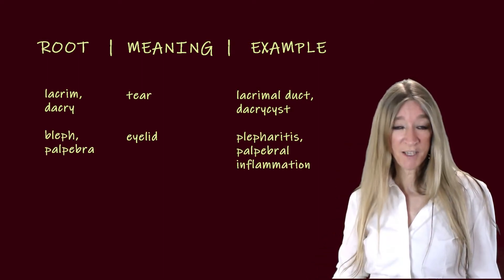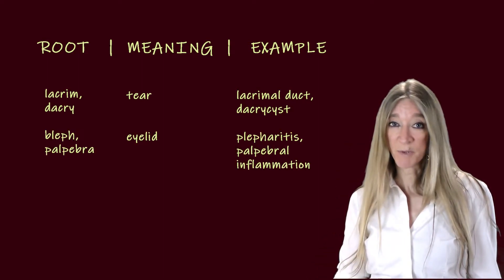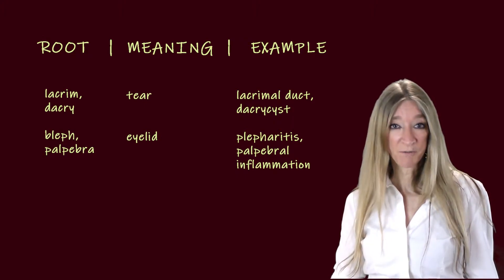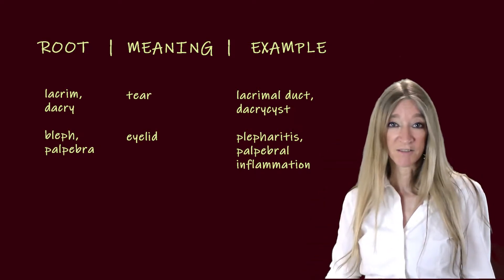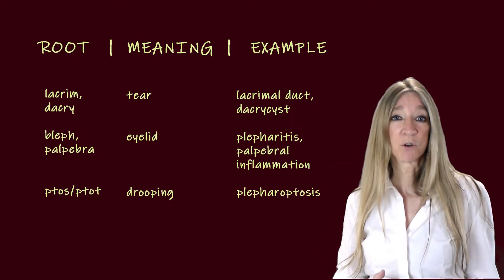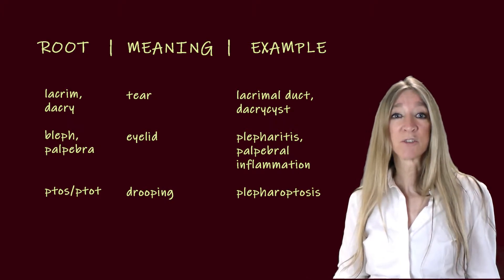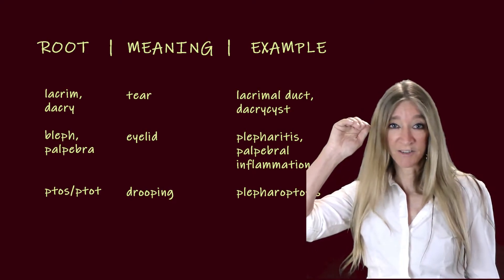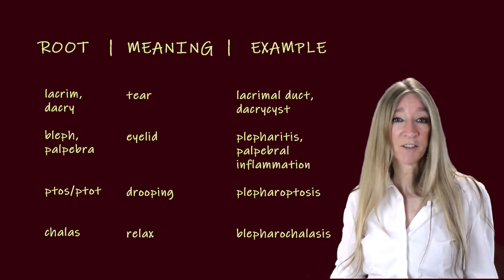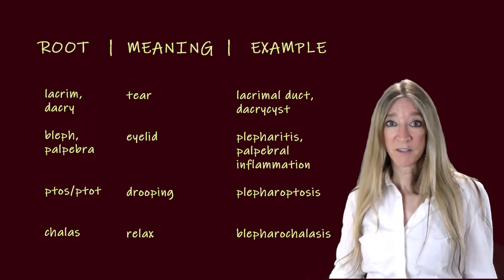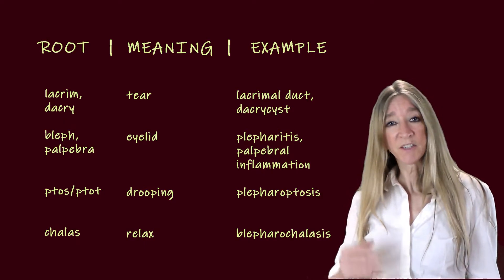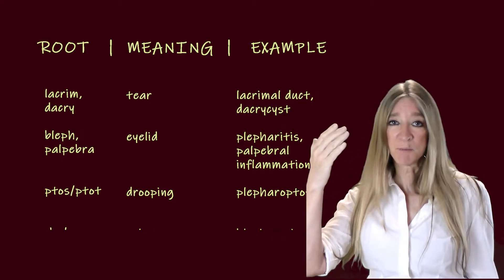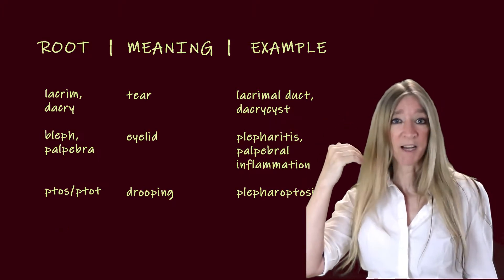The next roots, bleph and palpebra, both meaning eyelid. Blepharitis and palpebral inflammation are both inflammation of the eyelid. The next root, ptosis, often with the form ptote, means drooping. Blepharoptosis is a drooping eyelid. The next root, chalasis, meaning relax. An example is blepharochalasis — this is a condition in which the eyelid is stretched out because of a disease in which it intermittently becomes inflamed and then goes back to normal.